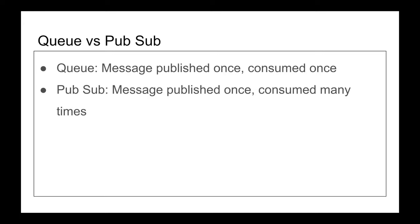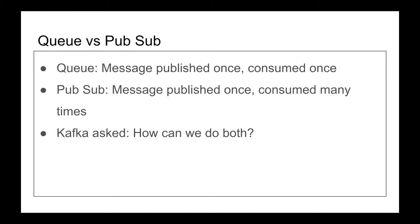You don't use Kafka for ad hoc queries. You use it for fast writing and distributed processing of events. This is an example of a PubSub architecture. PubSub and queues each have their use cases. Kafka came in and said 'we want to do both' — and that's bold. Kafka answered this question from the beginning, from the design. And the answer was consumer groups.